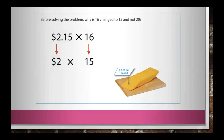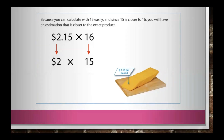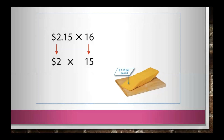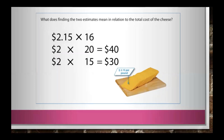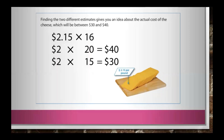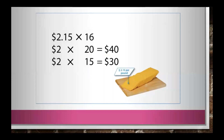Why is 16 changed to 15 and not 20? Because you can calculate with 15 easily, and since 15 is closer to 16, you will have an estimation that is closer to the exact product. The product of 2 and 15 is 30, so the cheese will cost a total of about $30.00. Finding the two different estimates gives you an idea about the actual cost of the cheese, which will be between $30.00 and $40.00.